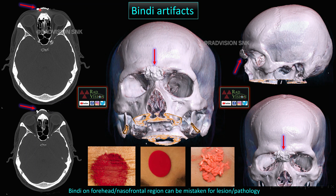Next case: there is a hyperdense area noted in the forehead and nasofrontal region with a dense artifact. On VRT reconstructions, the lesion is clearly seen outside the bone, not attached to it. Retrospectively, this was found to be a large bindi or kumkum kept traditionally on the forehead. Sometimes turmeric and rice can be mixed and applied as tilak, and these can produce artifacts and mimic pseudo lesions.